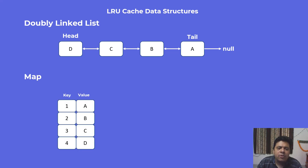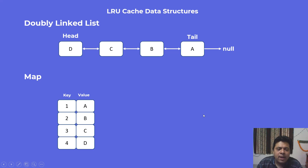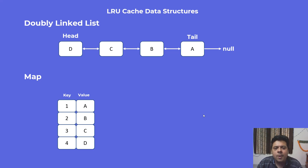That other data structure is a map. A map allows us to access an element based on its key in constant time. So if we have elements A, B, C, D with keys 1, 2, 3, 4, we can access element B using its key in constant time. Together, these two data structures — a doubly linked list and a map — can help us build an LRU cache implementation. The code is available in the comment section below, implemented in JavaScript using a doubly linked list and JavaScript objects, but these concepts apply in Java, Python, C#, or any language you prefer.